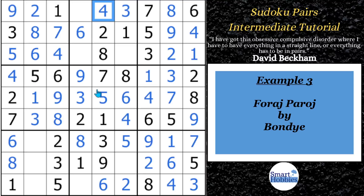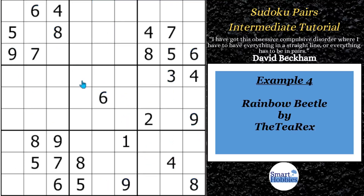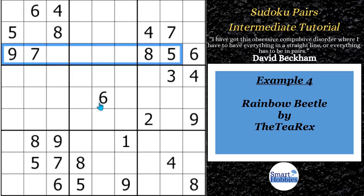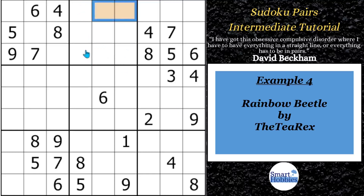We're about to move on to hidden pairs, but be advised my last example does apply to naked and hidden pairs as well. For my fourth example, this is Rainbow Beetle by the T-Rex, and this is the very start of the grid. What you might see is you have a five and eight coming up column four, a five and eight cutting across row two, and then a five and eight cutting across row three. Since these are the only two possibilities for five and eight here in block two, these two cells have to be a five and an eight.